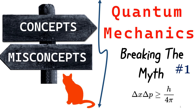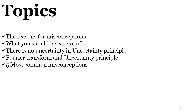First in this video I would like to show you the topics we are covering — as you have already understood from the thumbnail, this is related to Heisenberg's Uncertainty Principle. We would be dealing with the reasons why misconceptions happen in our day-to-day life and what we should be careful of. We would also look at why there is no uncertainty in the Uncertainty Principle, look into Fourier Transform and its relation with the Uncertainty Principle, and the five most common misconceptions.